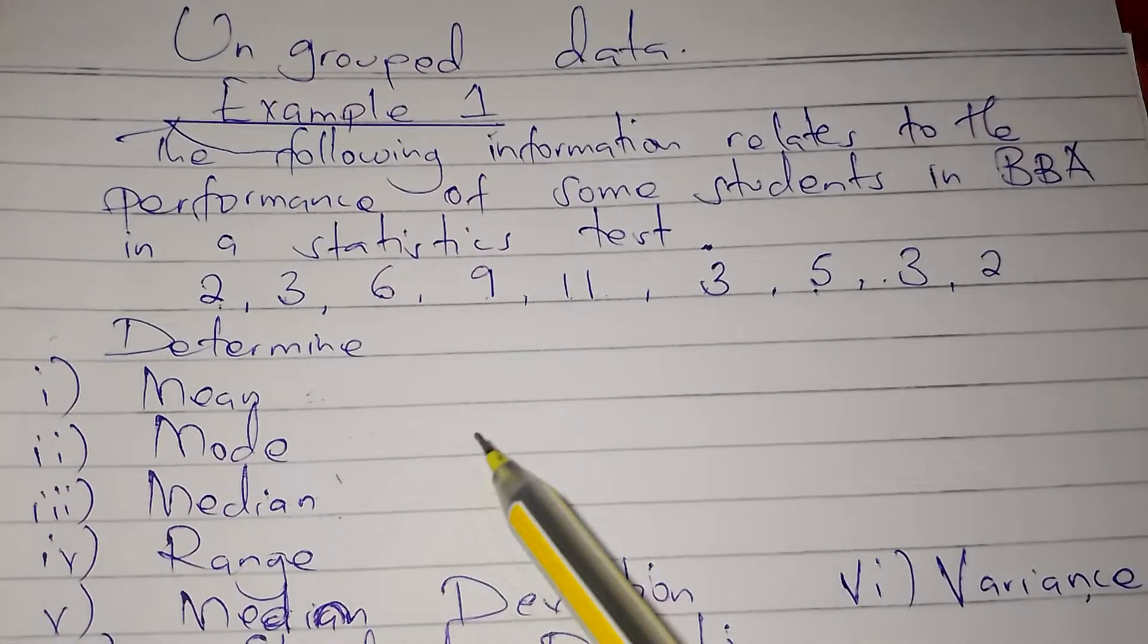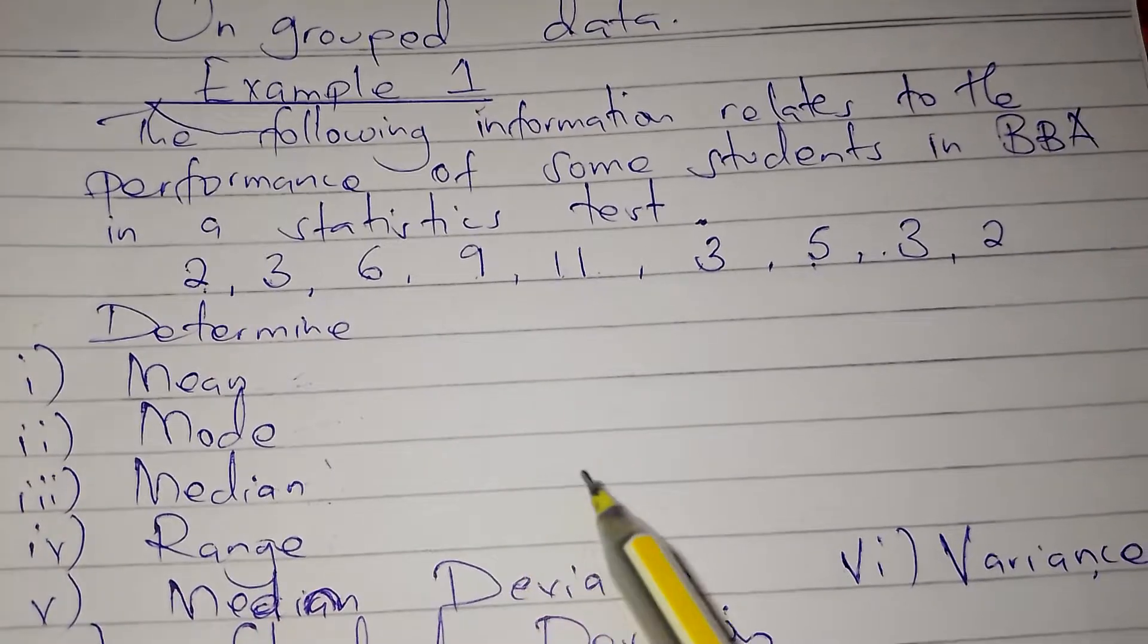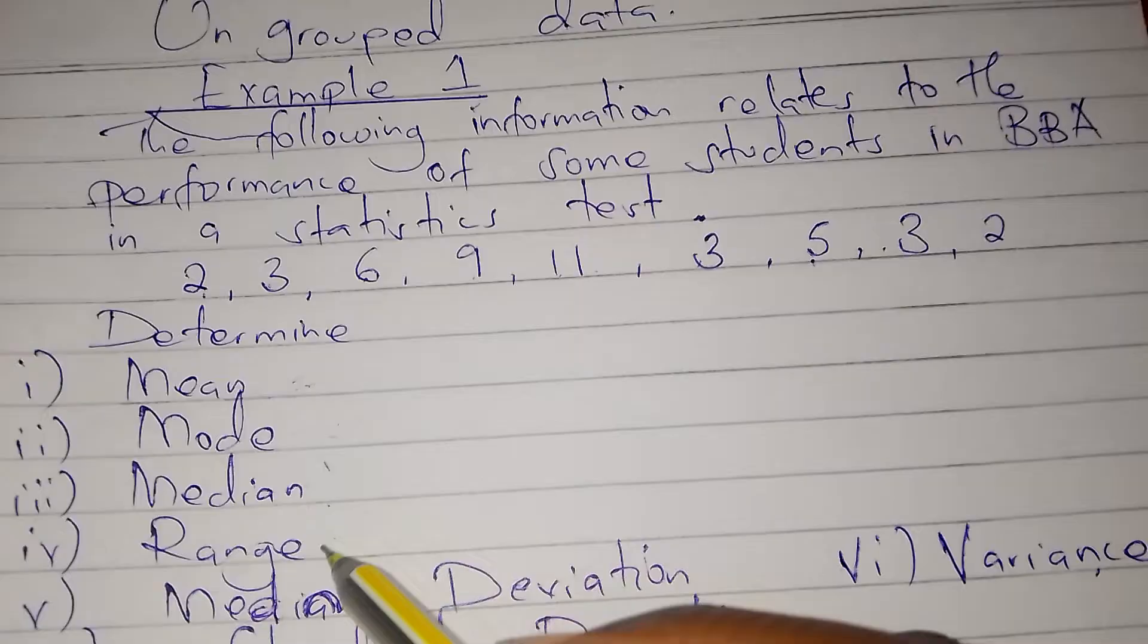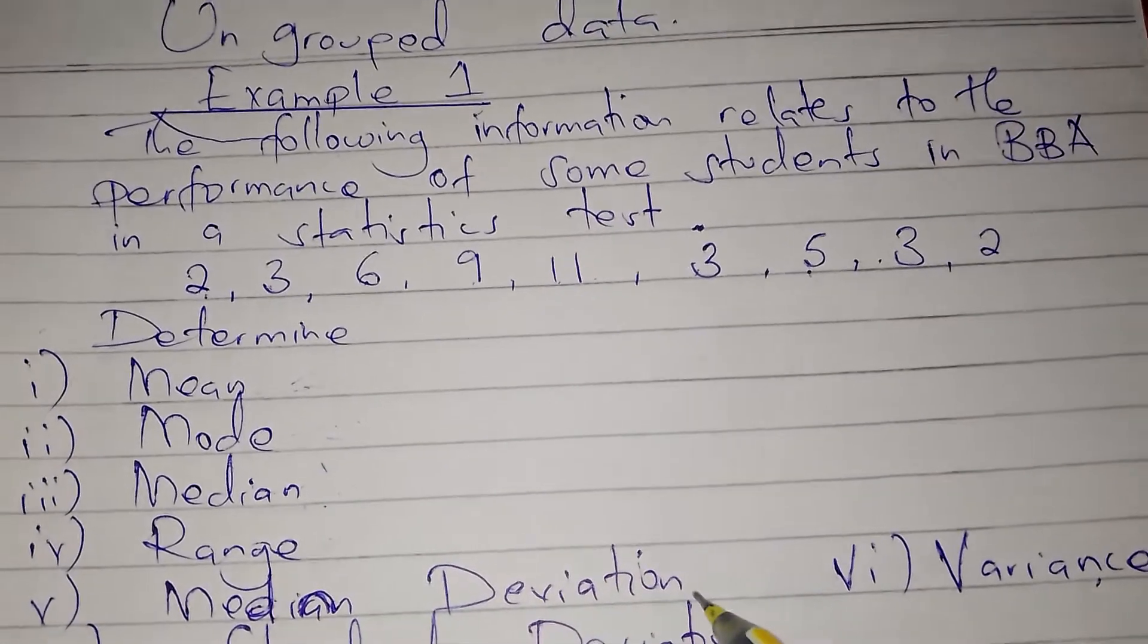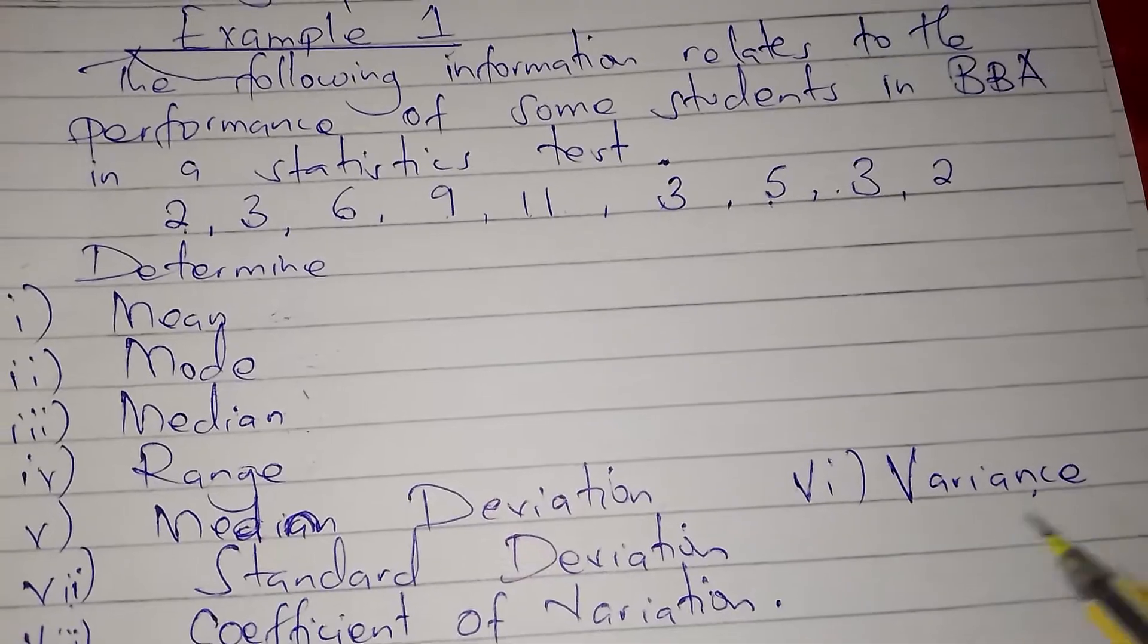We are still continuing with our question for ungrouped data. We managed to look at mean, mode, median, range, and mean deviation. In this video we are going to look at variance and standard deviation.